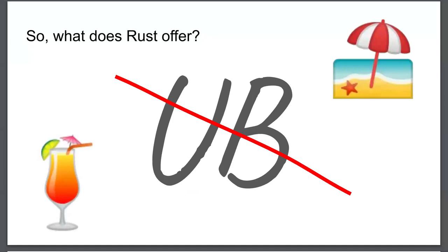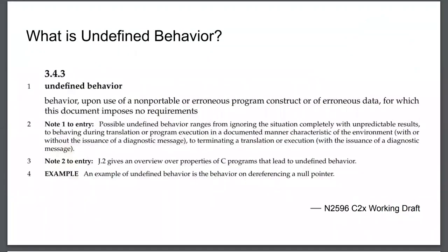Rust also has the concept of undefined behavior, and what Rust offers is non-defined behavior in the safe subset. There are conditions to uphold, which we will see today. For those who don't know: undefined behavior, as defined in the C standard, is the use of a non-portable or erroneous program construct for which the standard does not say what the compiler has to do. In plain terms, if you invoke undefined behavior — for example, you have a data race — your program may do anything, and the optimizer may change your code completely.